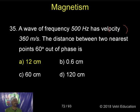A wave of frequency 500 hertz has velocity 360 meters per second. The distance between two nearest points 60 degrees out of phase. So this is an interesting problem.